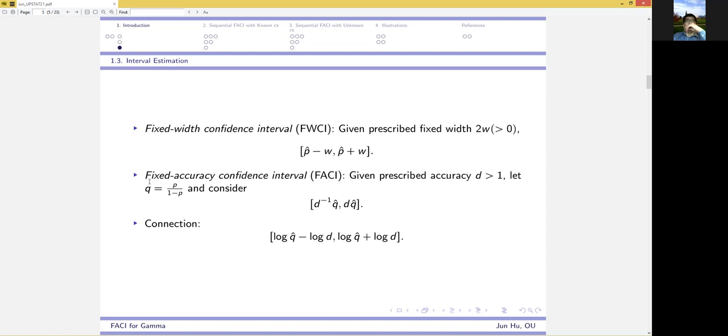So, alternatively, we turn to the so-called fixed-accuracy confidence interval, where we do the transformation and define q to be p over 1 minus p. And then, given prescribed accuracy d greater than 1,